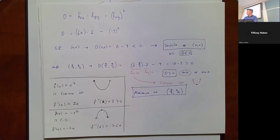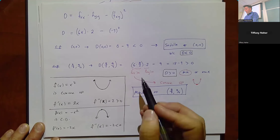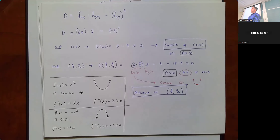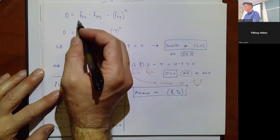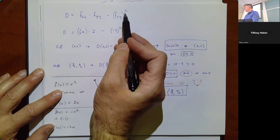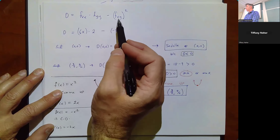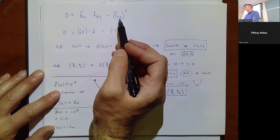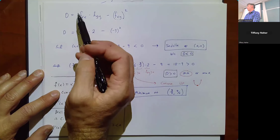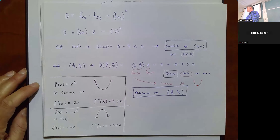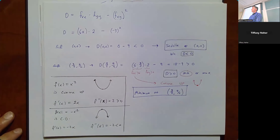When D is positive, it's always true that fxx and fyy must have the same sign. Because D = fxx · fyy - (fxy)², and since (fxy)² is always positive, the only way for D to be positive is if fxx · fyy is a larger positive number — which requires fxx and fyy to share the same sign.